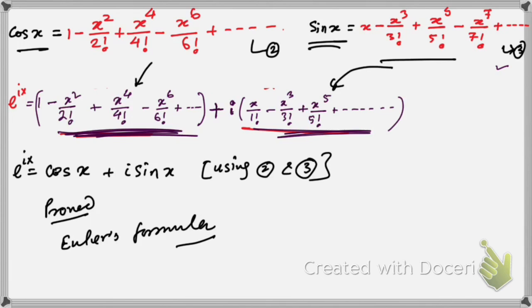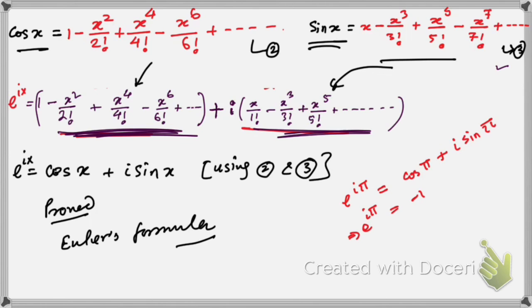One more thing: this is called Euler's identity. If you put x equal to pi, so e to the power i pi equals cos pi plus i sin pi. Now cos pi equals minus 1 and sin pi equals 0, so this becomes e to the power i pi equals minus 1, which implies e to the power i pi plus 1 is equal to 0. This is Euler's identity.